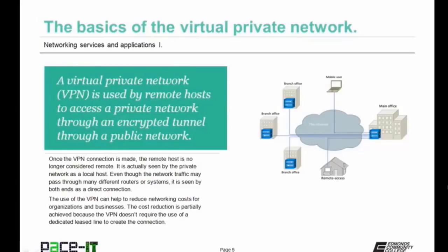Even though the network traffic may pass through many different routes or systems, it's seen by both ends as being a direct connection. The use of the VPN can help to reduce networking costs for organizations and businesses. The cost reduction is partially achieved because the VPN doesn't require the use of a dedicated leased line to create that direct connection. There are several different types of VPNs. There is the site-to-site VPN, which allows a remote site's network to connect to the main site's network and be seen as a local network segment. VPN concentrators on both ends of the VPN will manage that connection.